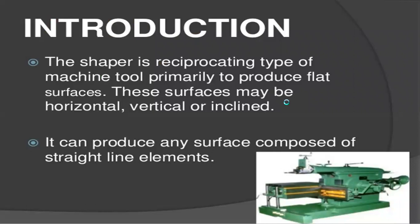First of all, what is a shaper machine? The shaper is a reciprocating type of machine tool, primarily used to produce flat surfaces. These surfaces may be horizontal, vertical, or inclined. The shaper machine reciprocates the cutting tool using different mechanisms, but the operation is the same regardless of mechanism type.